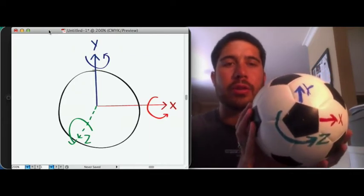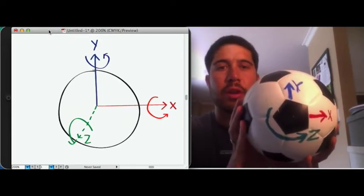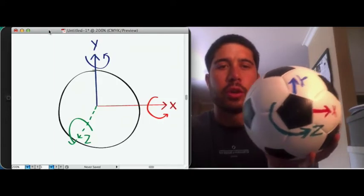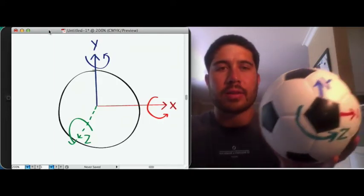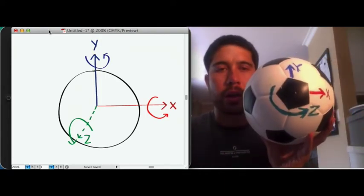So when we talk about three-dimensional motion, the soccer ball can move along the x-axis, and x, y, or z-axis. So we call that translation. So it can translate like this, like this, or in and out of the screen.